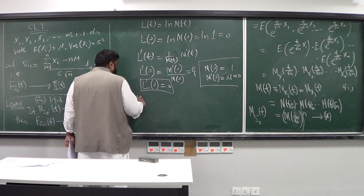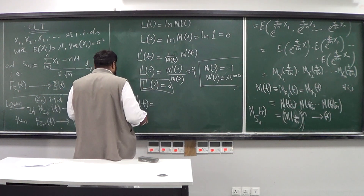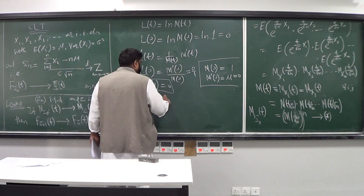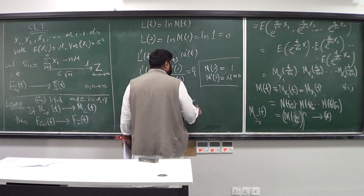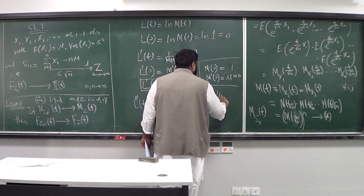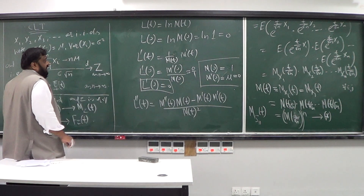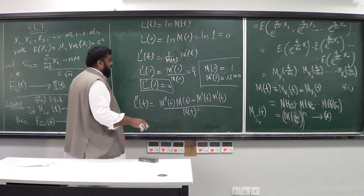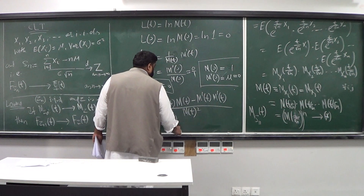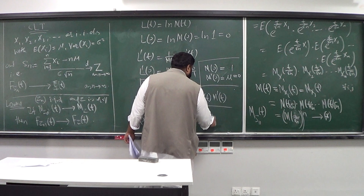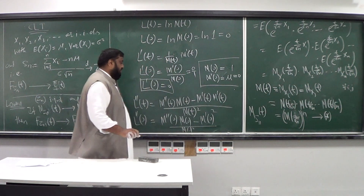Now let's compute the second derivative l''(t). Using the quotient rule on l'(t) = M'(t)/M(t), we get l''(t) = [M''(t)·M(t) − (M'(t))²] / [M(t)]². Evaluating at 0: l''(0) = [M''(0)·M(0) − (M'(0))²] / [M(0)]².